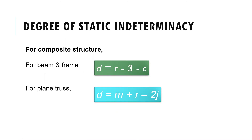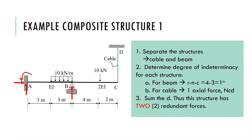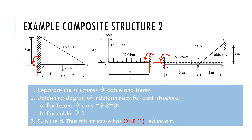Now, let us apply these equations to a composite structure. This composite structure consists of a beam and cable system. In order to determine the d, we separate the structures into cable and beam, then determine the d for each. For the beam, we use r minus n minus c, and here we get one degree. For the cable, there is one extra force, so d is equal to 1. Summing up the d, this structure has two redundant forces.